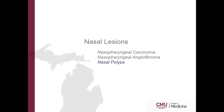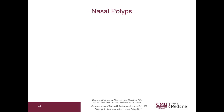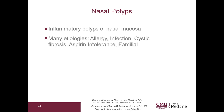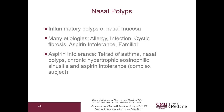Let's go on to discuss nasal polyps. These are inflammatory polyps of the nasal mucosa with many etiologies: allergy, infection, cystic fibrosis, aspirin intolerance, and familial forms. Aspirin intolerance refers to a tetrad of asthma, nasal polyps, chronic hypertrophic eosinophilic sinusitis, and aspirin intolerance. We are simply mentioning it because nasal polyps are part of the tetrad.